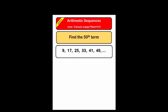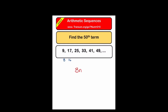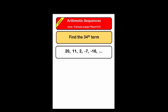This one asks us to find the fiftieth term of the sequence. We can see that we add eight each time, so the formula is going to have an eight n in it. Writing down the eight times table, I can see I need to adjust it by adding one to each term, so the formula is eight n plus one. Putting fifty in place of n gives eight times fifty plus one, which is four hundred and one. That is the fiftieth term of the sequence.